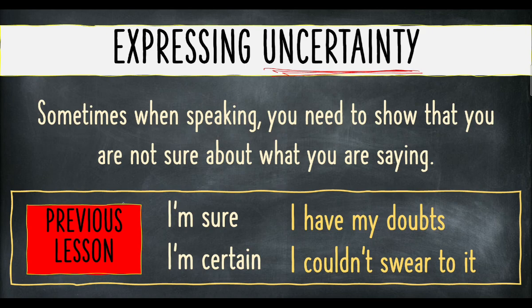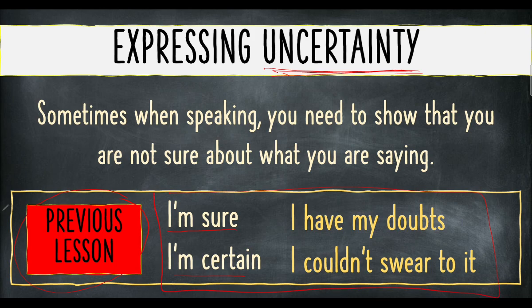From our previous lesson, if you have done the listening activity, you were introduced to four phrases: 'I'm sure' and 'I'm certain' — these two express certainty, kamu yakin. But if you are uncertain, you can use 'I have my doubt' — saya ada ragu-ragu — or 'I couldn't swear to it' — maksudnya saya rasa saya nampak tu tapi tak berani janji. Also 'I might be wrong.' These four expressions are already included in the listening audio from the previous lesson.